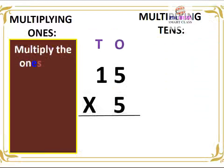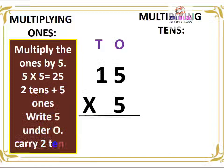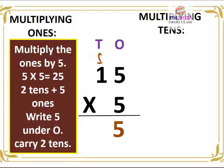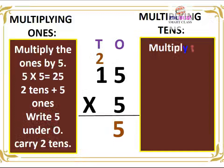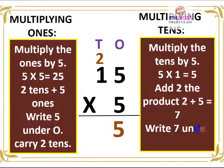15 × 5. Multiplying ones: multiply the ones by 5. 5 × 5 is equal to 25, that is 2 tens plus 5 ones. Write 5 under O, carry 2 tens. Multiplying tens: multiply the tens by 5. 5 × 1 is equal to 5, add the carried 2. 2 plus 5 is equal to 7, write 7 under T. 15 × 5 is equal to 75.